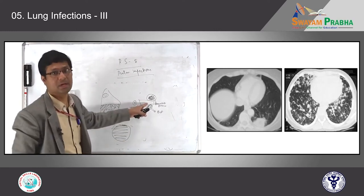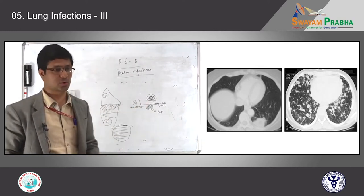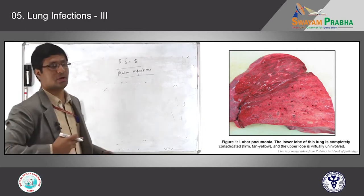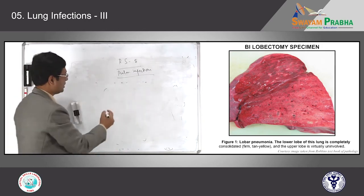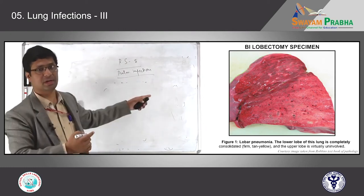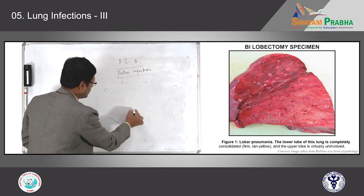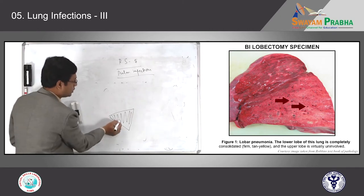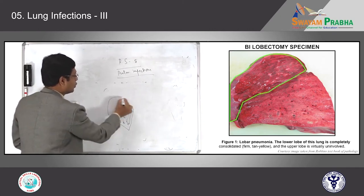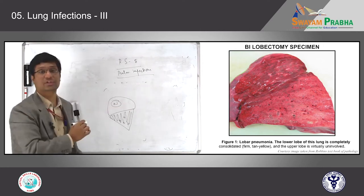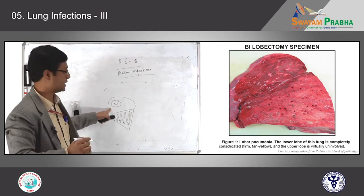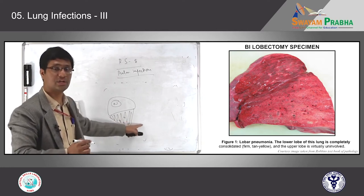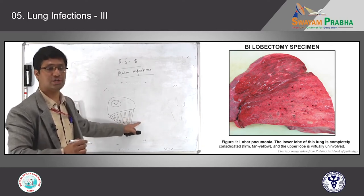In gross examination of the lung, on the lobectomy specimen the upper lobe is perfectly fine, but the lower lobe shows grey-white solidification of one complete lobe. You can still make out the bronchial openings. The upper lobe looks morphologically normal with a spongy appearance. This is lobar pneumonia affecting one complete lobe — the grey-white discoloration, solidification, or consolidation.